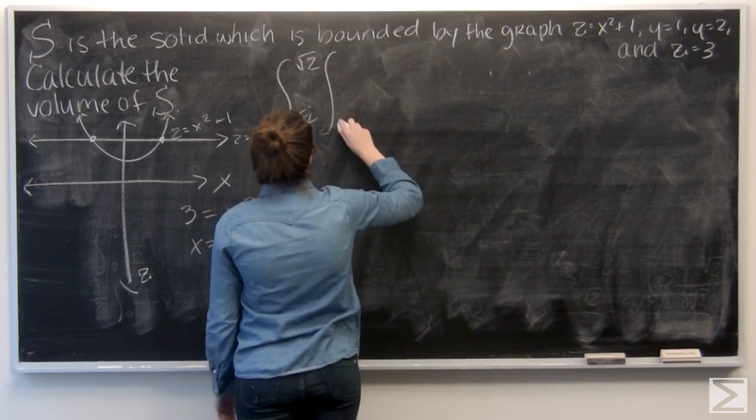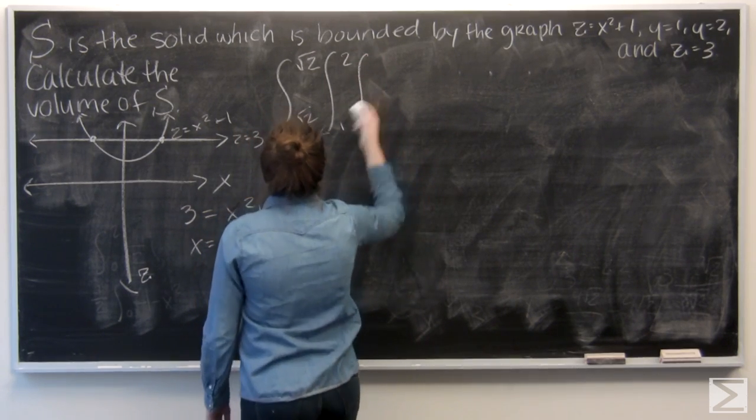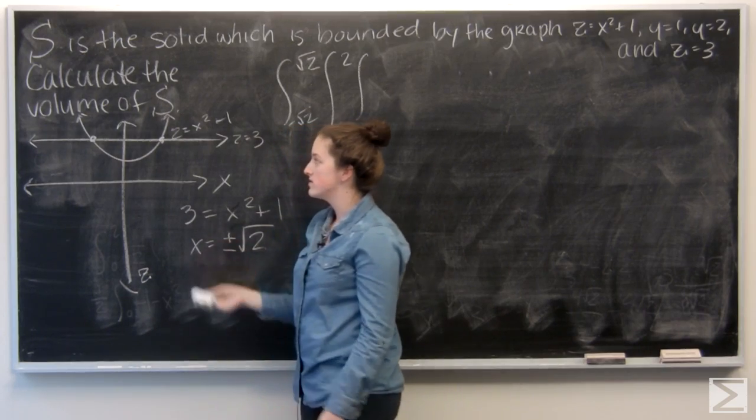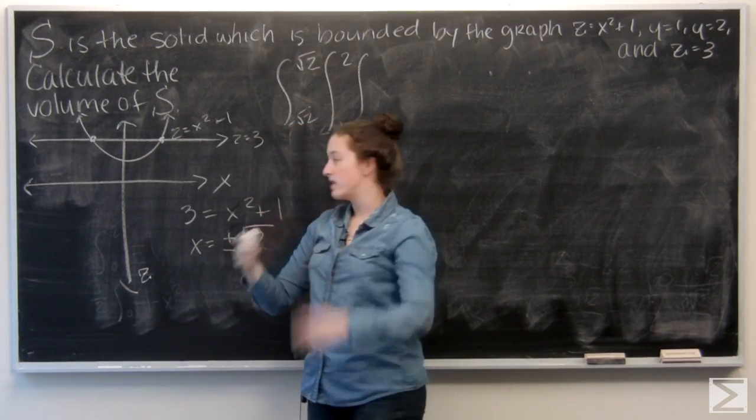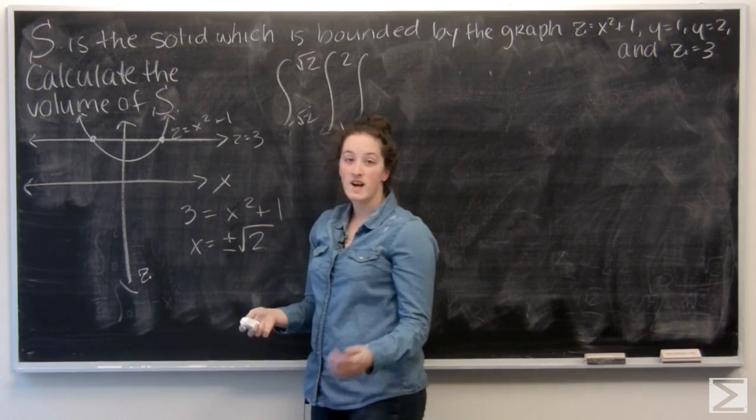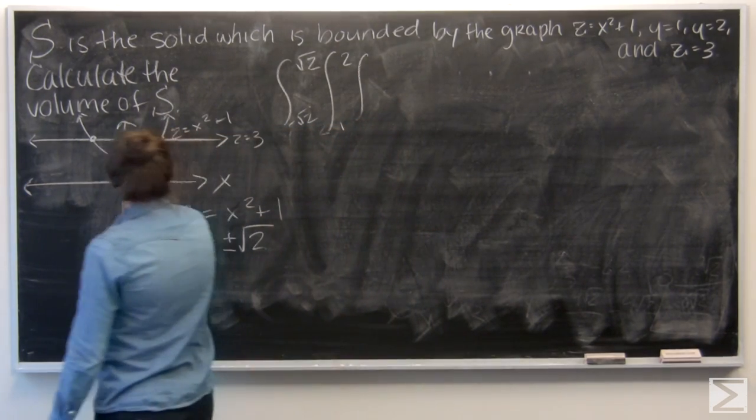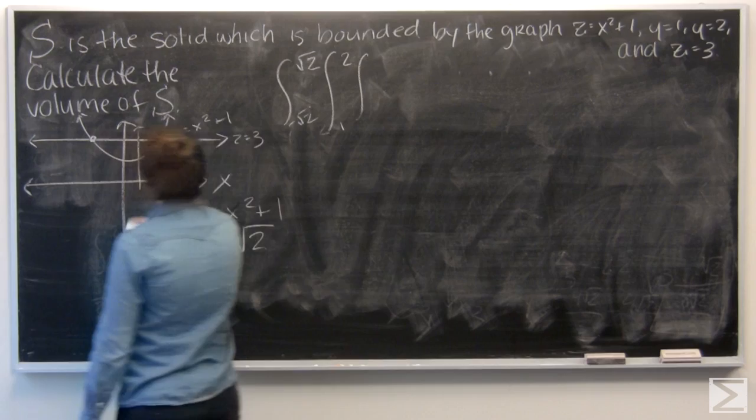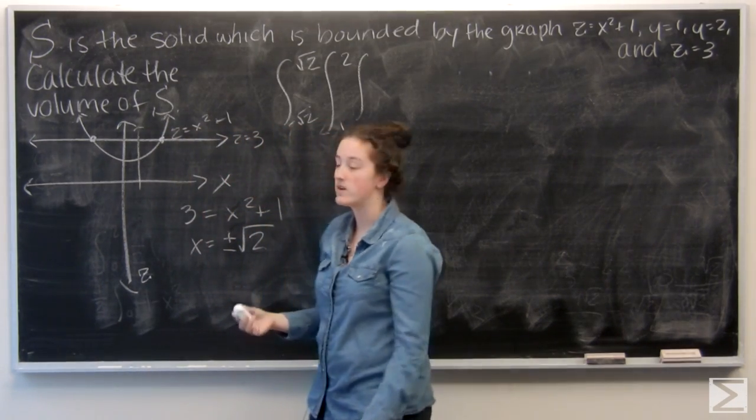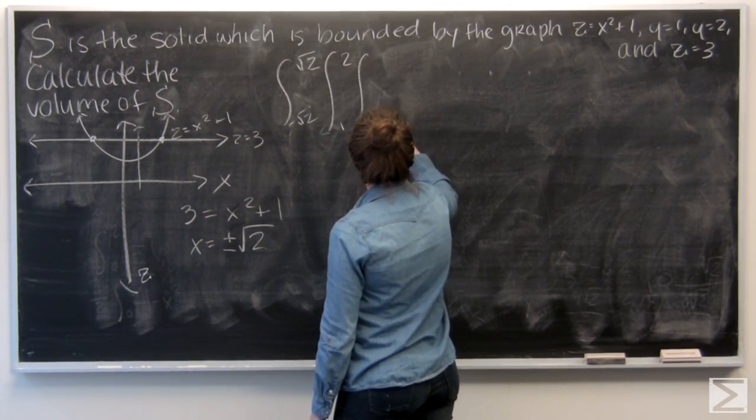And then y is from 1 to 2. Now I want to set my z bounds. Remember, we go lower bound to upper bound. So here the x squared plus 1 is actually on the bottom. If I think about drawing a line up like this, I hit x squared plus 1 before I hit 3, so that needs to be on the bottom.